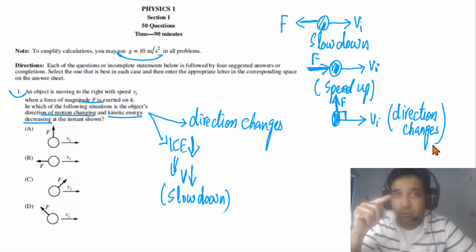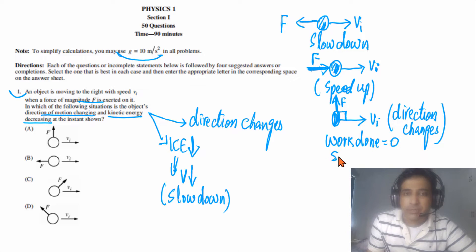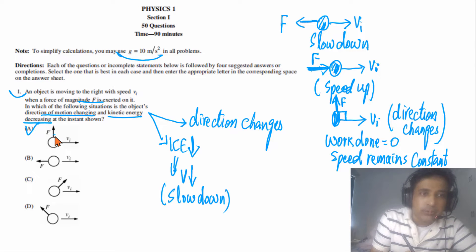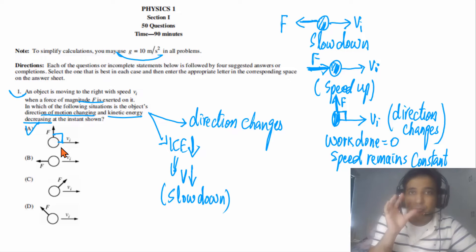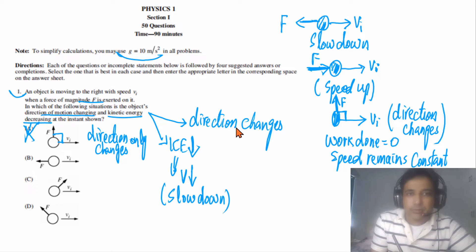When force is at 90 degrees, the work done is zero so speed remains constant. Looking at option A: the force is at 90 degrees to the direction of motion, so only direction changes but speed does not decrease. This is not the correct answer because we need both direction to change and speed to decrease.